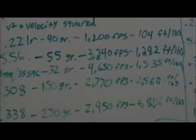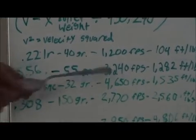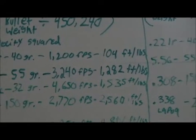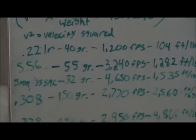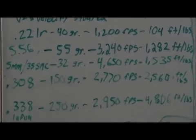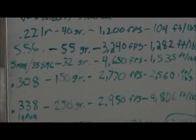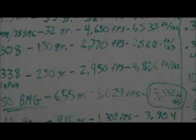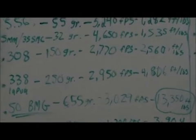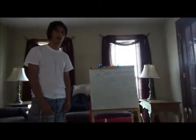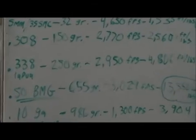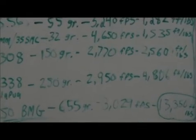A regular 308 150 grain has 2,560 foot-pounds. A 338 Lapua has 4,806 foot-pounds. I don't know if you guys know this, but a 338 has more stopping power than a 30-30 at point-blank range at a mile. So if you shoot somebody at a mile with a 338 Lapua, it's gonna have more foot-pounds than a 30-30 does at point-blank range.